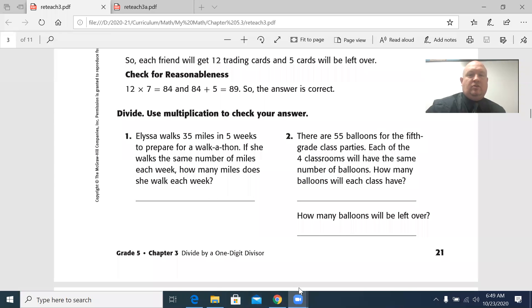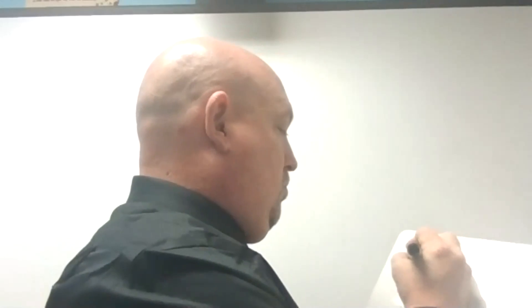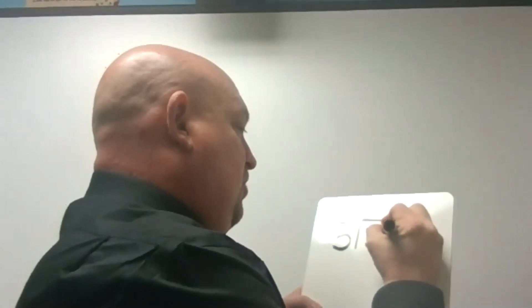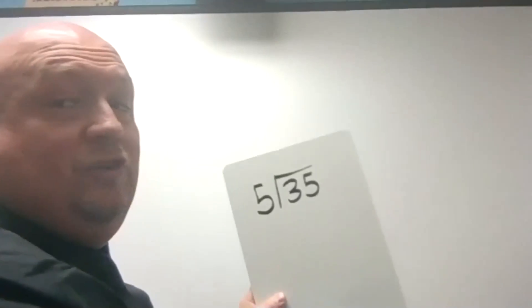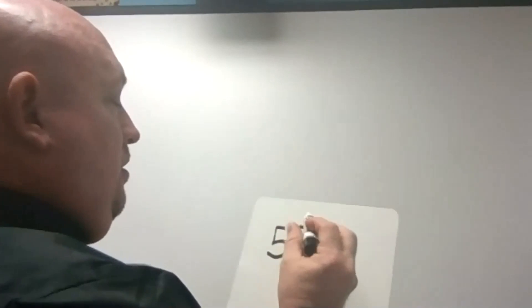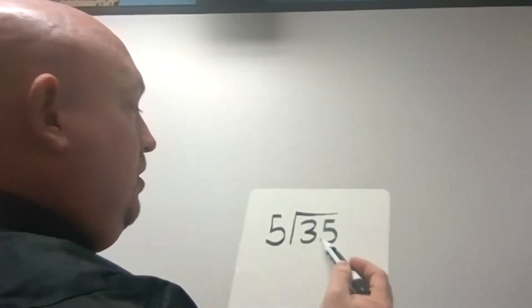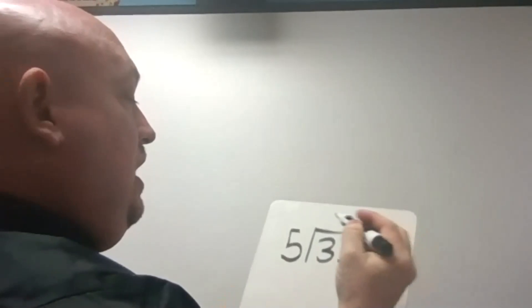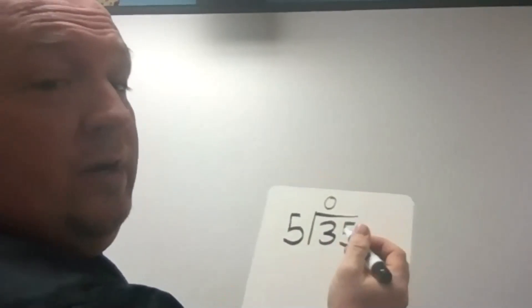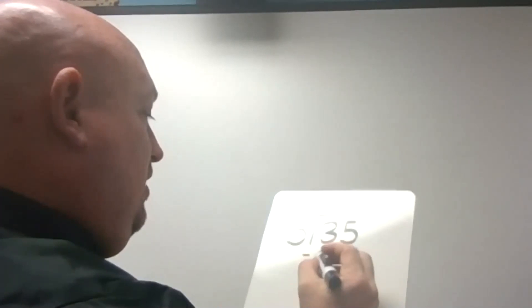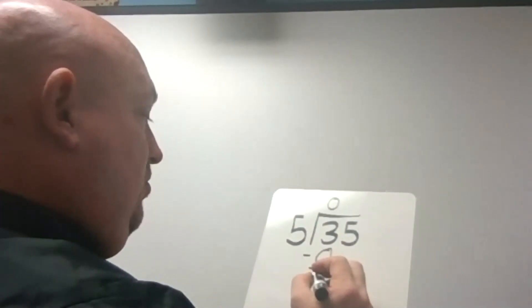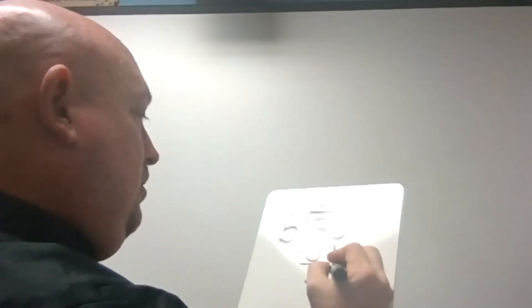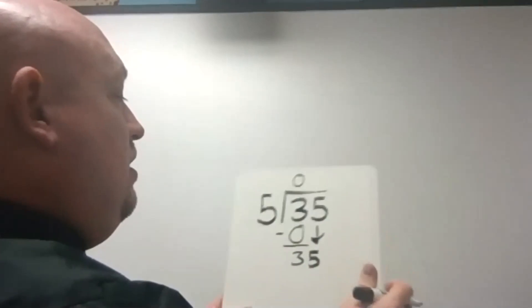I'm going to go ahead and stop my share to do this problem with you. Notice I tried to write it neatly. And if you remember my penmanship, it's not always nice. This is the tens, and this is the ones. Will 5 go into 3? It won't. If you want, you could put a 0 up here. It's not required. 0 times 5 is 0. I subtract. 3 minus 0 is 3. Check it. It's 3 less than 5. Yep.